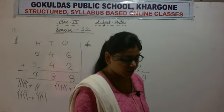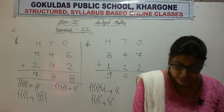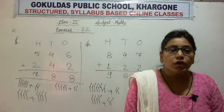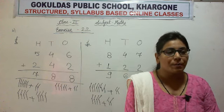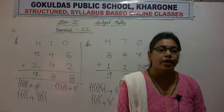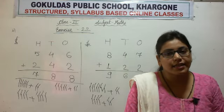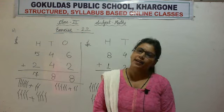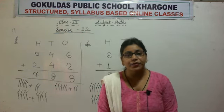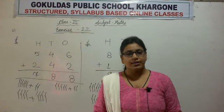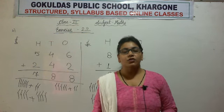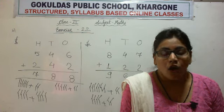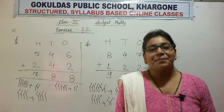Likewise, you can do the remaining parts of question number 1. With this, we have finished exercise 2.2 also. In exercise 2.1 we did 2-digit addition and 2-digit addition with regrouping. In exercise 2.2 we did 3-digit addition without regrouping. The only difference is that 2-digit numbers have no hundreds column, while 3-digit numbers have a hundreds column — but the addition process is the same: first add ones, then tens, then hundreds. Till then, we will meet in the next lecture. All of you stay home, stay safe, and keep practicing. Bye-bye students.